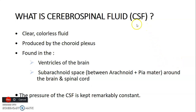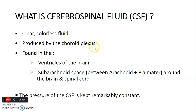Dr. Almenda. So let's continue with our series on meninges and CSF. What is cerebrospinal fluid? It's a clear, colorless fluid that is usually produced by the choroid plexus. It's found in the ventricles of the brain and the subarachnoid space.